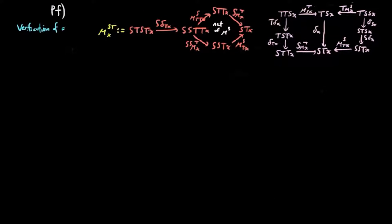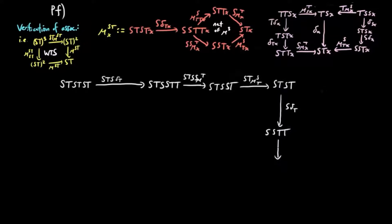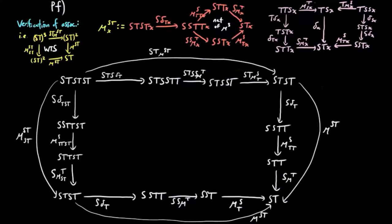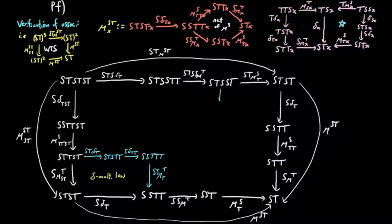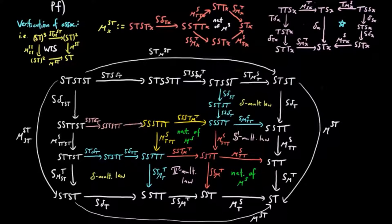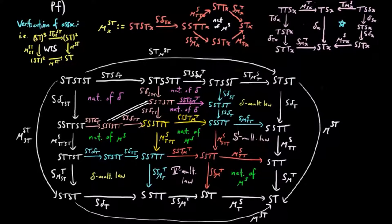Next, we need to verify the associativity of the multiplication mu_ST — in other words, the following diagram commutes. We unwind the definitions of the morphisms in the diagram to obtain the following square of composite morphisms. To show this commutes, we divide it into simpler commuting squares. We start by using the multiplication law for delta on the left, which shows the bottom left square commutes. Similarly, by the multiplication law for delta on the right, the top right square commutes. Next, using the multiplication law for the monads T and S, the adjacent squares commute. Then, by naturality of the multiplication mu_S, the bottom right square and the two leftmost squares in the middle row commute. Then we use the naturality of delta to show the remaining squares commute. Since each constituent square commutes, the entire diagram commutes, which implies that the multiplication law for ST via delta is satisfied.